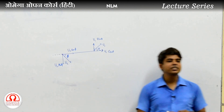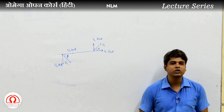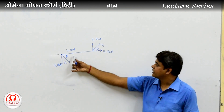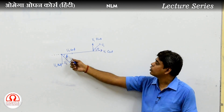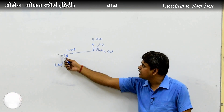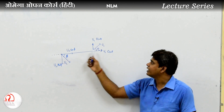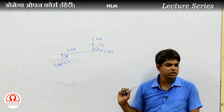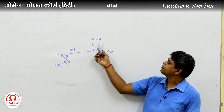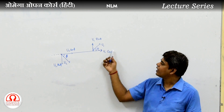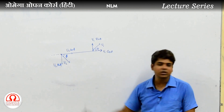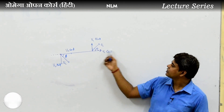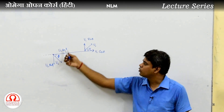For the radial component, the relative radial velocity is v2 cos phi minus v1 cos theta, or equivalently v1 cos theta minus v2 cos phi.